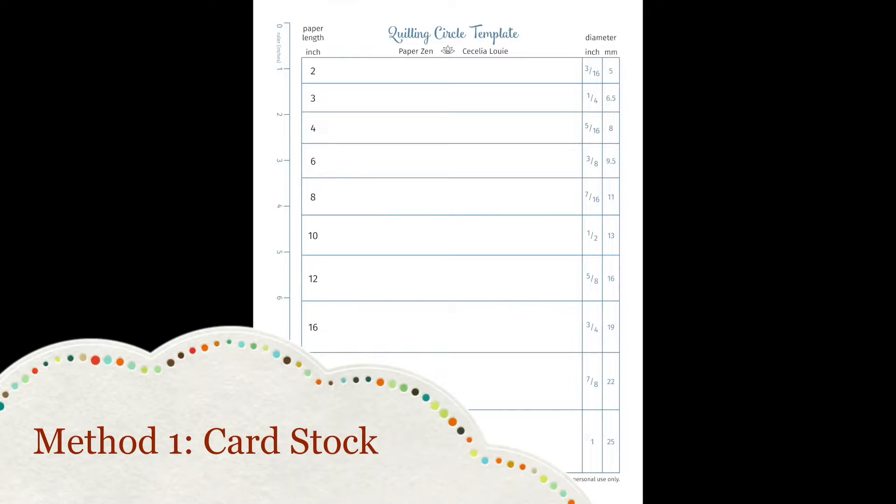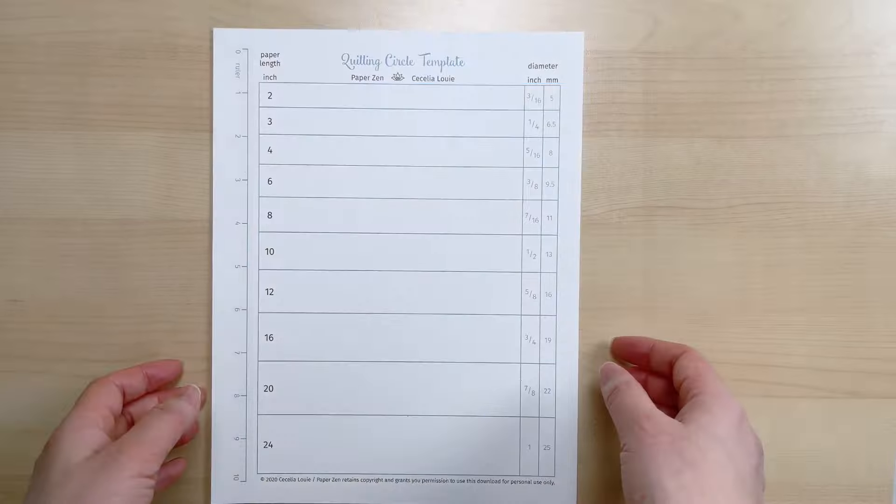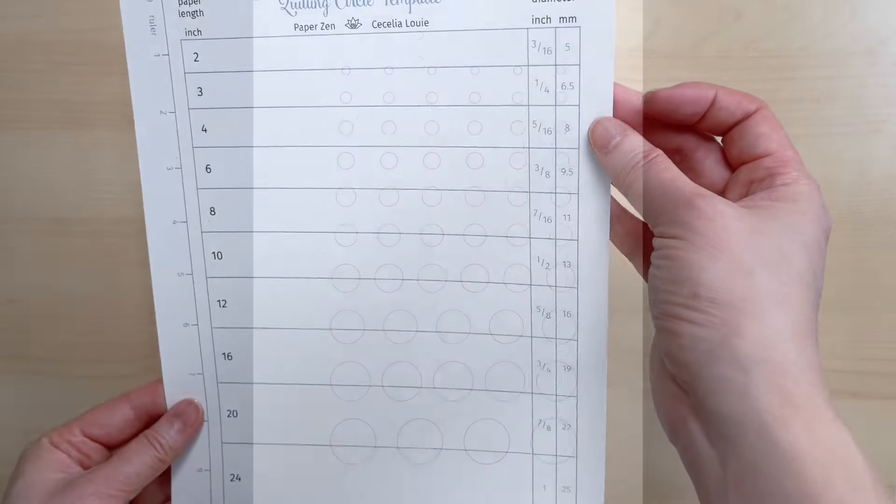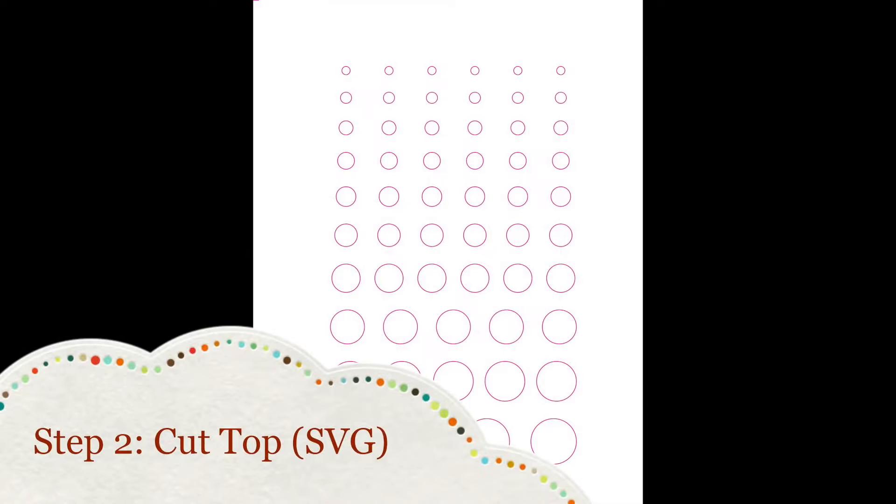Step one, print the PDF template onto cardstock. Step two, import the file cut top into design space. Load your printed template.